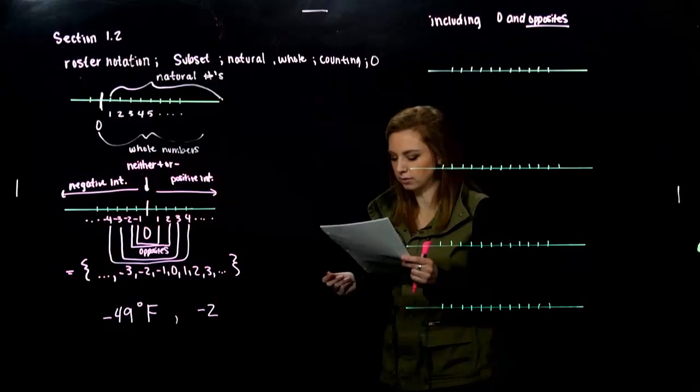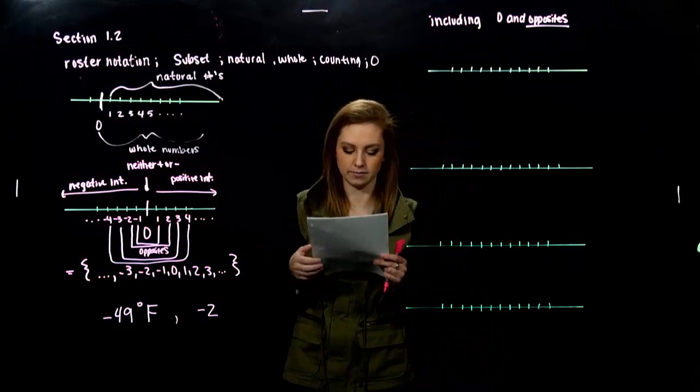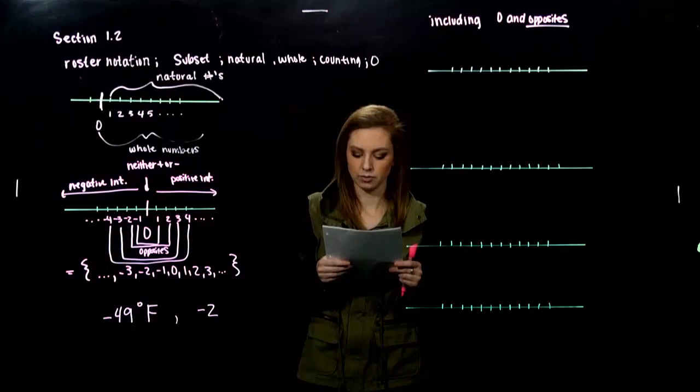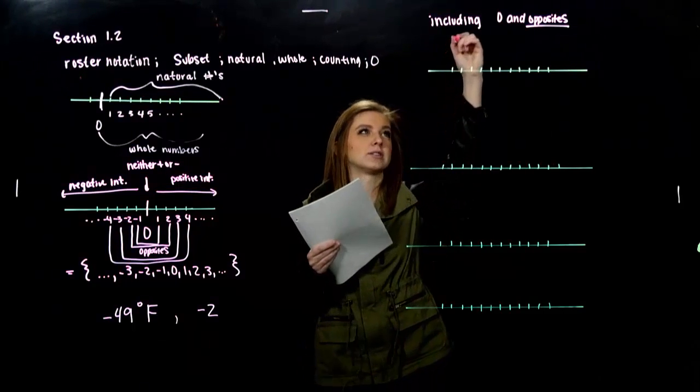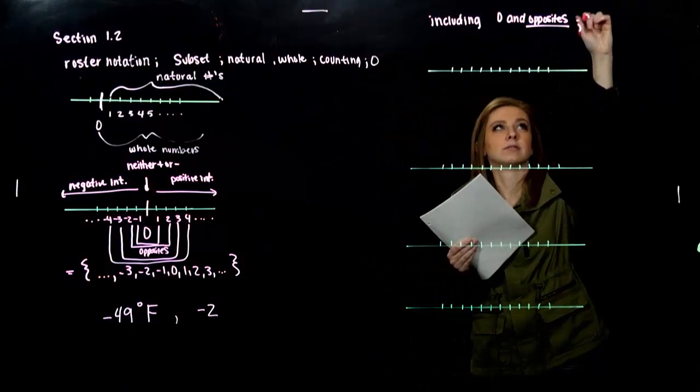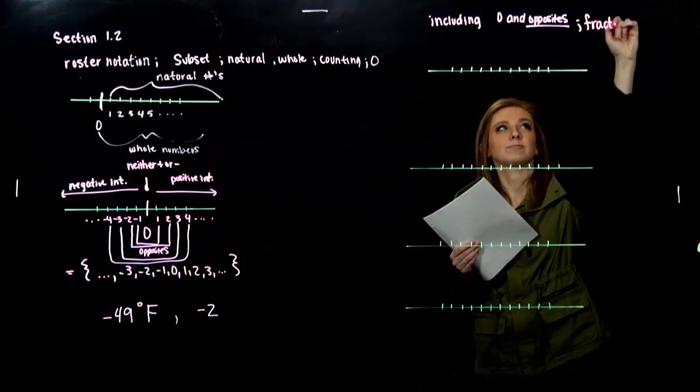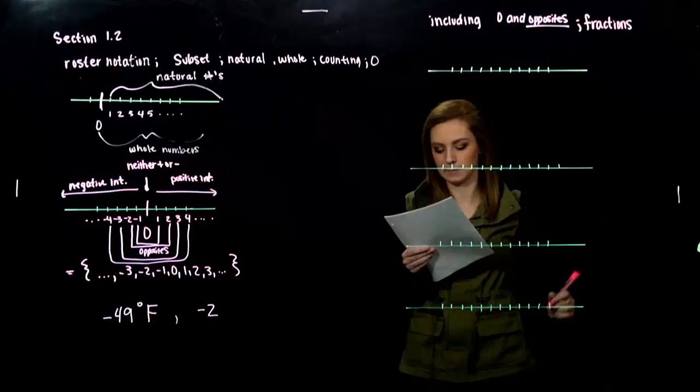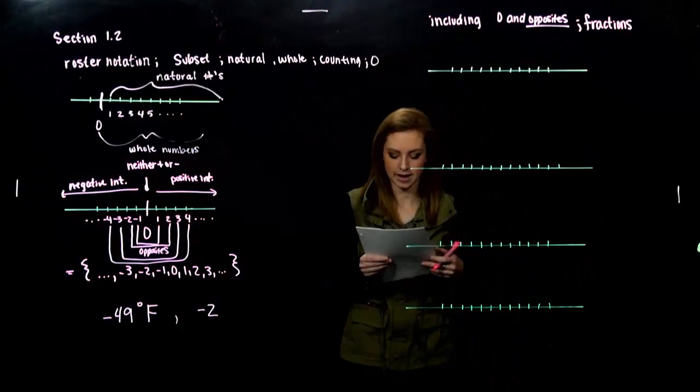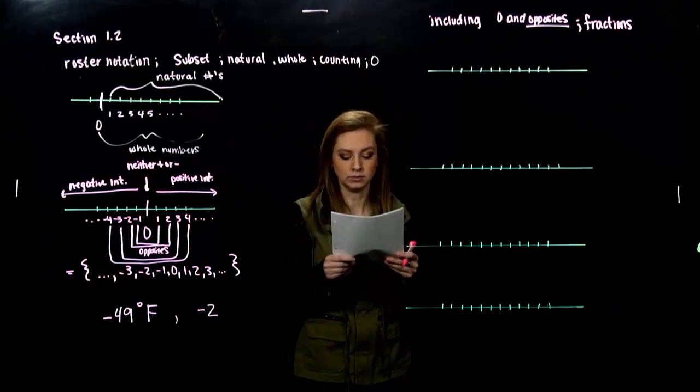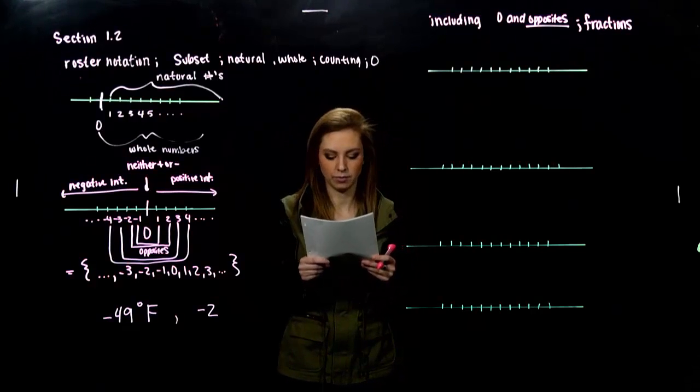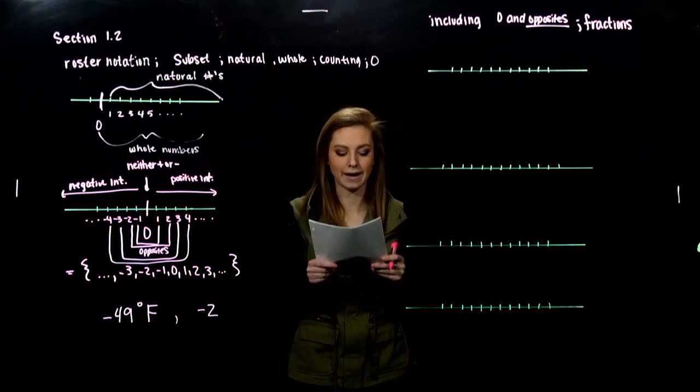So, we're going to build an even bigger set of numbers called the rationals. So, the rational numbers are quotients, fancy word just to say fractions, of integers. So, we have a lot of different examples. Two-thirds, negative two-thirds, seven over one, four, negative three, two point four, all of those things. Those are all rational.